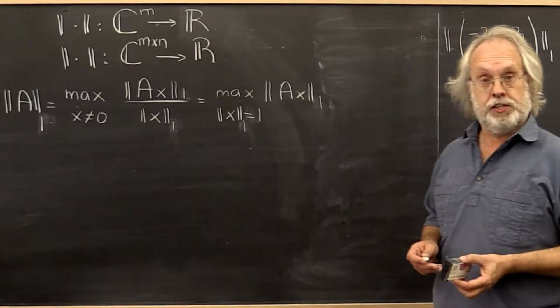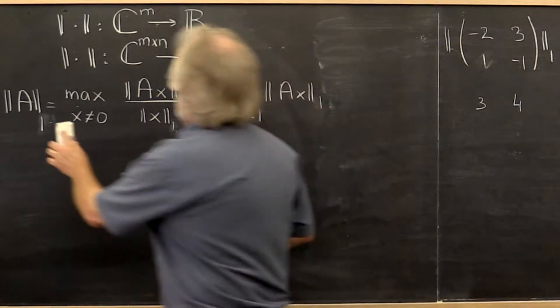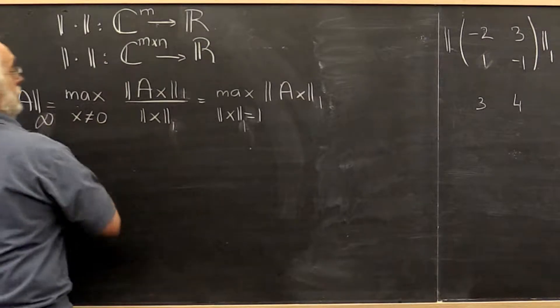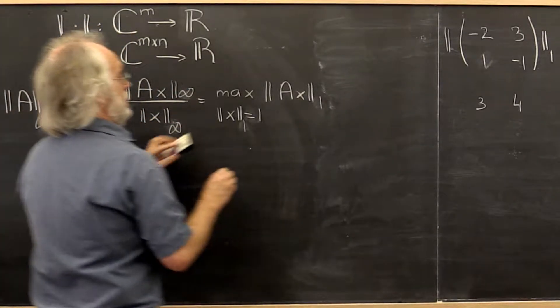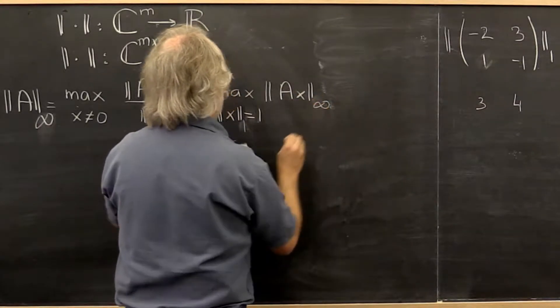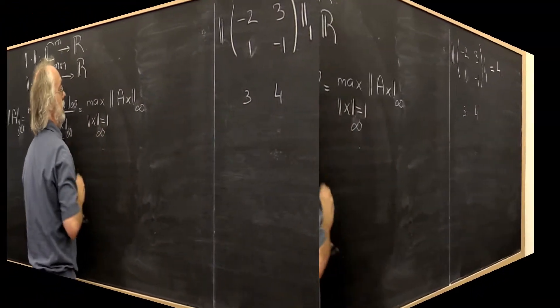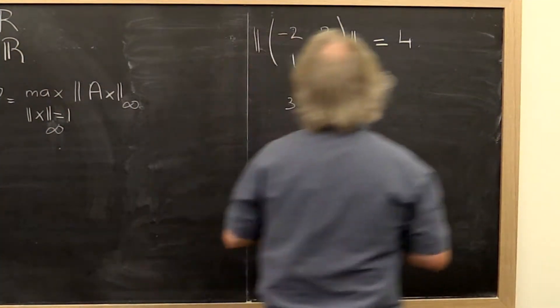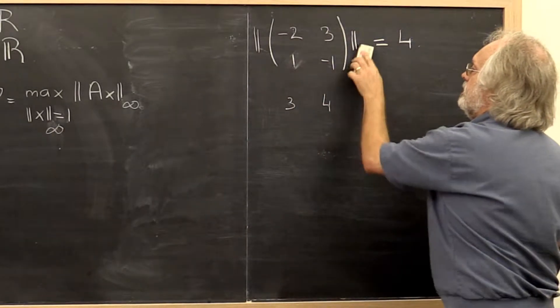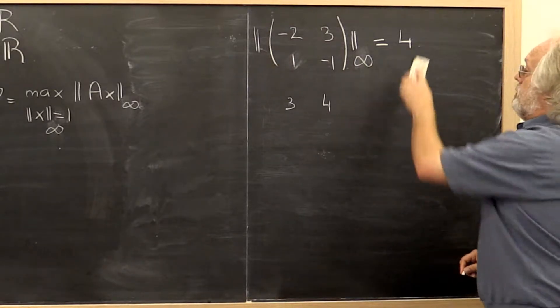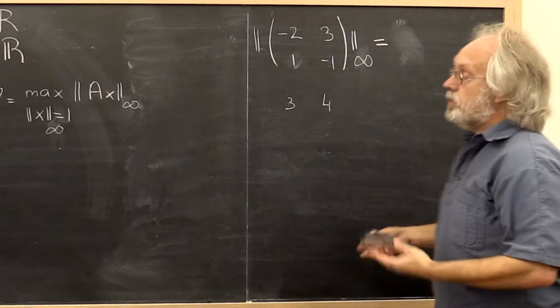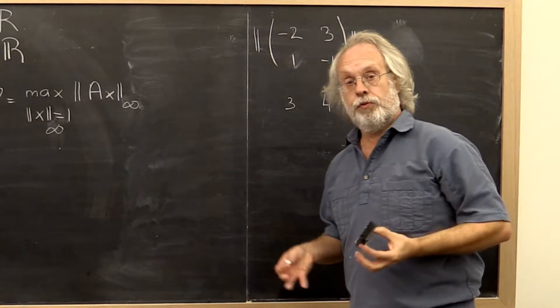Now let's look at the matrix infinity norm. Defining it is easy. We just replace everything with the infinity norm. And now let's move over here and ask the question, what is the infinity norm of this matrix? Well, turns out again, there is a simple formula for this.